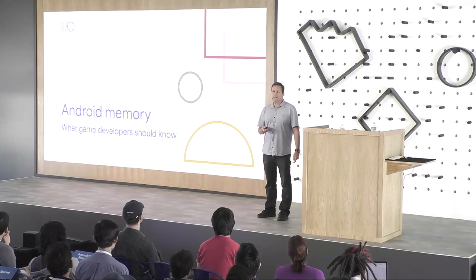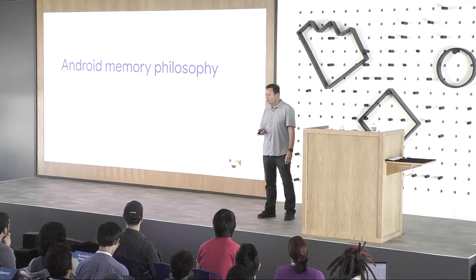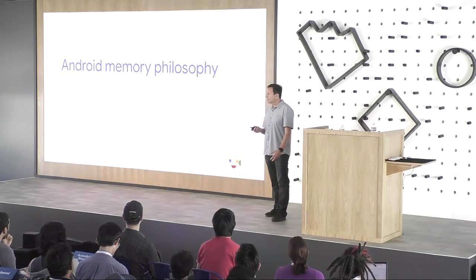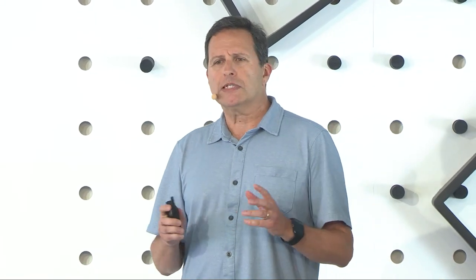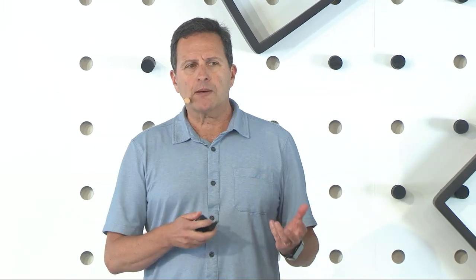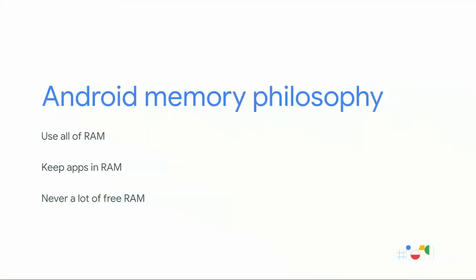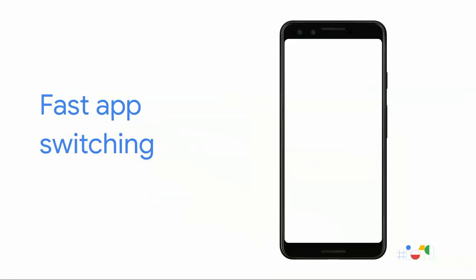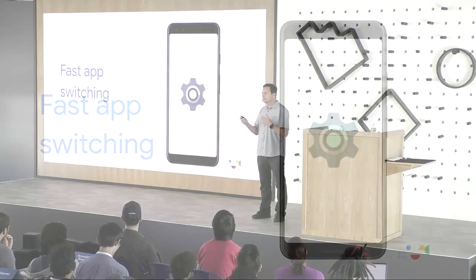Here are some things game developers should know about Android memory. The Android memory philosophy is similar to Linux because Android is based on Linux — it wants to use all of RAM. Free RAM is really doing no one any good; it's just sitting there doing nothing. The way Android uses all of this RAM is to keep apps in memory. As a result, you never really have a lot of free memory on Android devices. Apps are kept in memory so you can do fast app switching — if you put an app in the background and go to another app, you can switch back because those apps stay resident in memory.